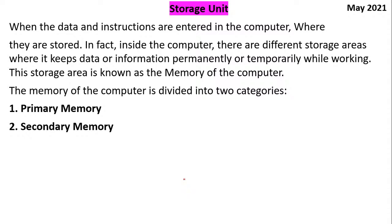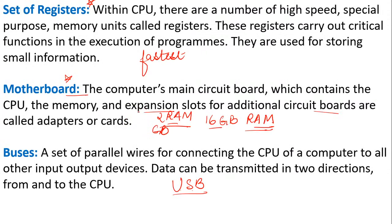Storage units — all the data and instructions are stored in the storage unit. These are of two types: primary memory and secondary memory. From an exam point of view, there could be a question: where would you add additional RAM into a computer? The answer will be motherboard. Also, which is the main circuit board? The answer will be motherboard — not fatherboard or daughterboard.